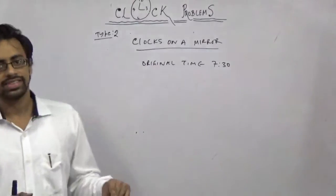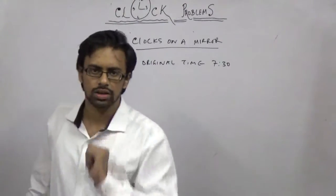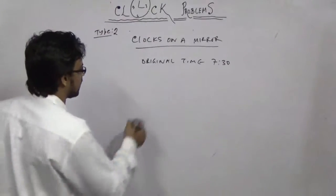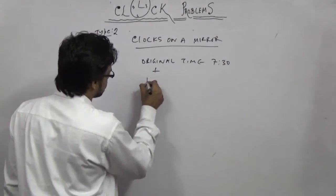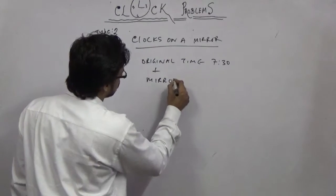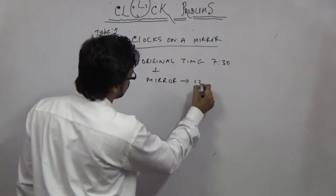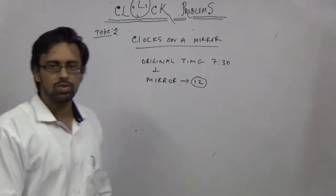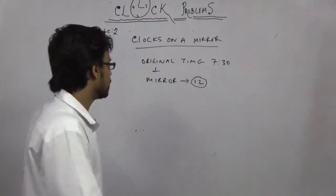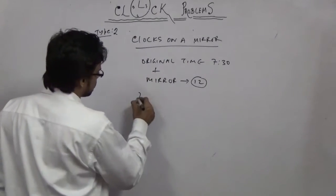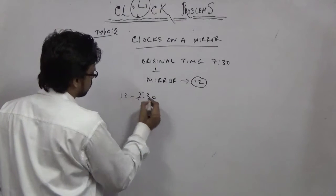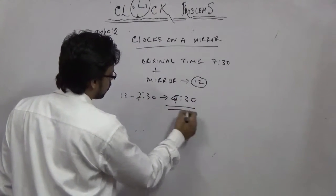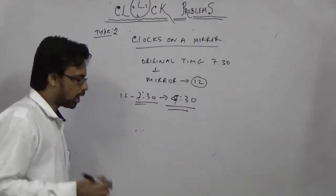But how do we solve this in an examination in one second? We can't wait for it. This is a formula: original plus mirror is always equal to 12. Always 12. Original plus mirror will always give you 12.